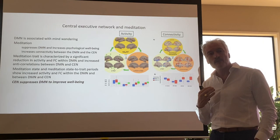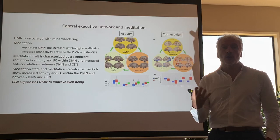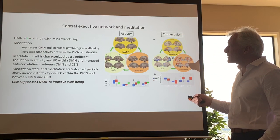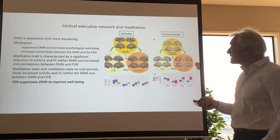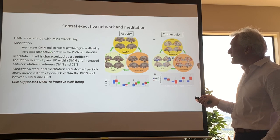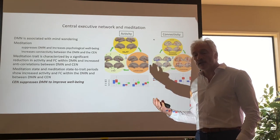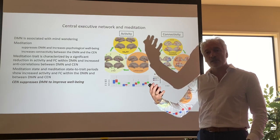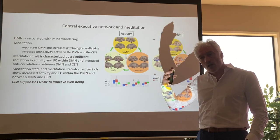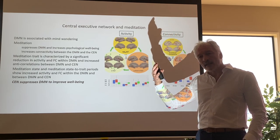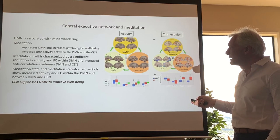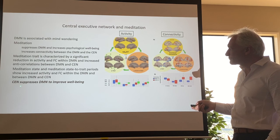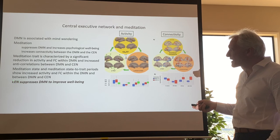If the central executive network functions well, it can help you cope with uncertainty. Meditation is one way of doing that: meditation suppresses the default mode and increases psychological well-being by increasing connectivity between the default mode and the central executive network. The central executive network is thereby capable of suppressing rumination — consistent, long-lasting mind-wandering about one specific aspect deemed salient — improving your well-being.